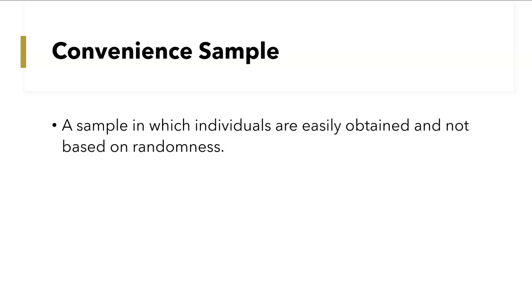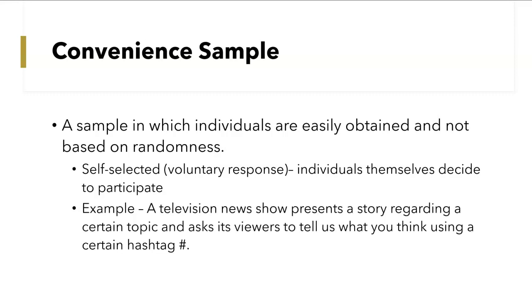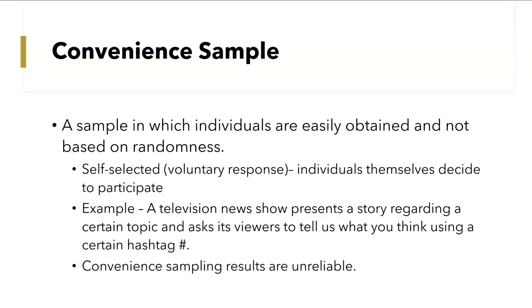Then we have convenience sample — a sample in which individuals are easily obtained and not based on randomness. One of the most popular types is self-selected or voluntary response, where individuals themselves decide to participate. For example, a television news show presents a story on a certain topic and asks viewers to share their opinion using a hashtag. Individuals select to participate on their own. Convenience sampling results are usually unreliable because people aren't selected at random.